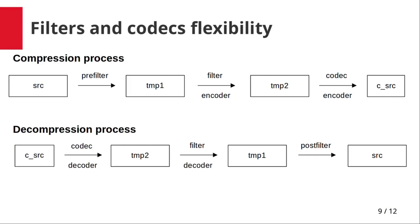Blosc2 also has a rich variety of filters which can be combined with codecs to achieve interesting compression results. Such filters can be pipelined so that the output of one can be the input for the other. In addition, Blosc2 implements pre-filters that can be used prior to the filter pipeline during compression, and post-filters that can be used after the filter pipeline during decompression. The combination of both could be interesting for supporting, for example, encryption via pre-filters and decryption via post-filters.